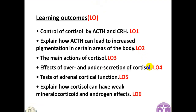In this module we have a number of learning objectives to cover. First, I will talk about the control of cortisol by ACTH and the corticotrophic hormone from the pituitary gland. Then I will explain how ACTH can lead to increased pigmentation, the main actions of cortisol, features of over and under secretion, how to diagnose adrenal disorders, and how cortisol can have weak mineralocorticoid and androgen effects due to hormone or receptor homology.